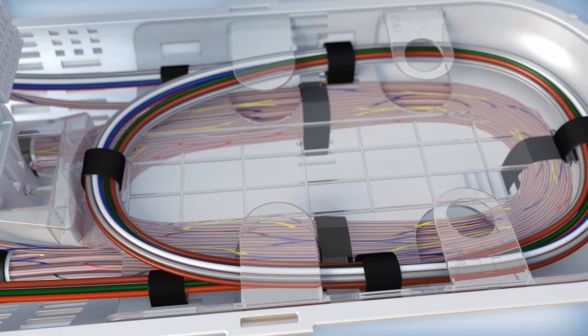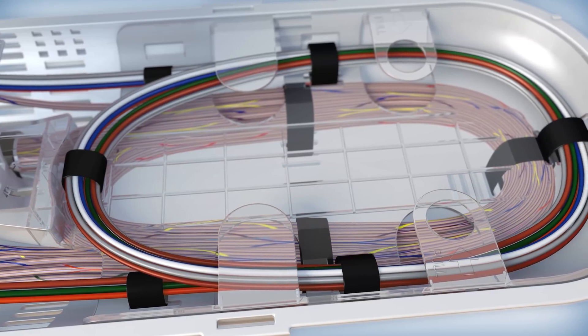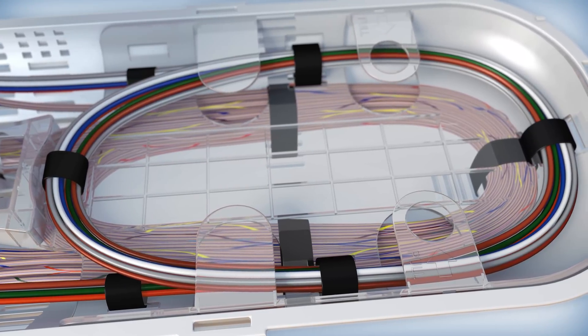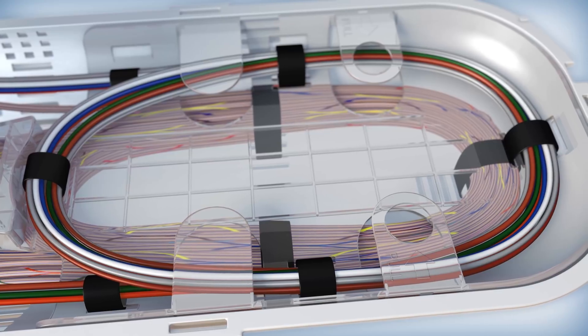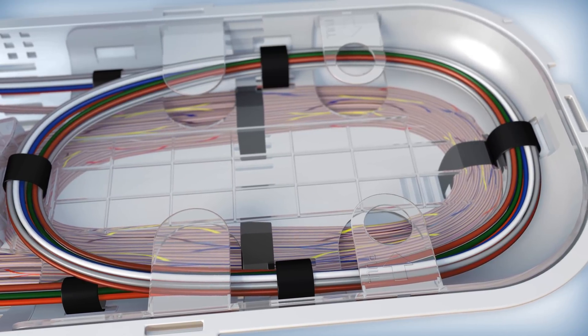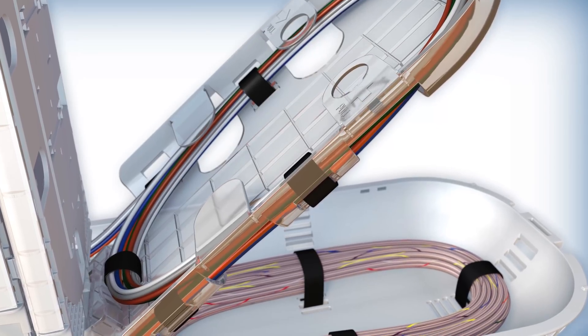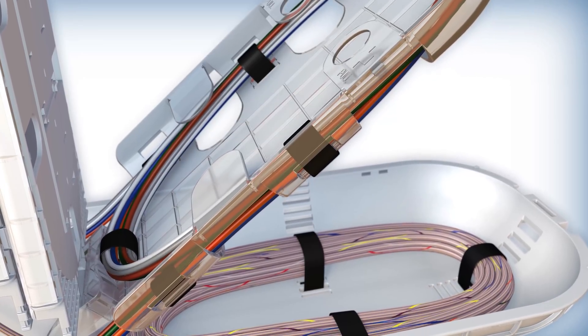For better organization, an optional inner basket can hold buffer tube slack, separating it from ribbon fiber slack while preventing pinching or macro bends and still offering visibility to the ribbon fiber slack. The inner basket pivots into a lock position to provide access to ribbon fibers.